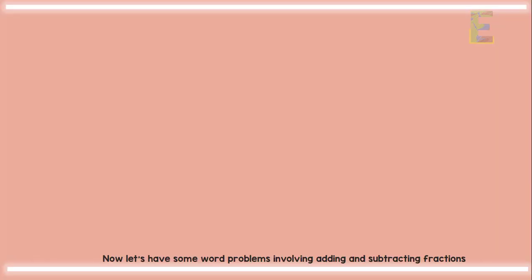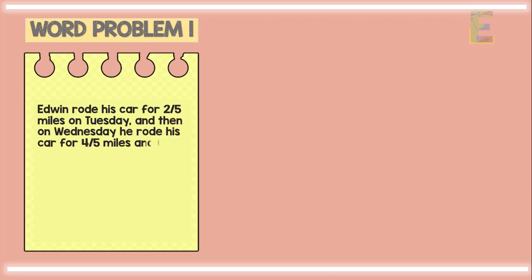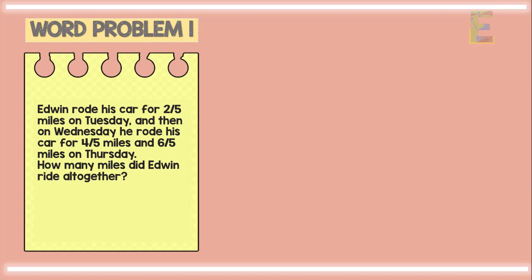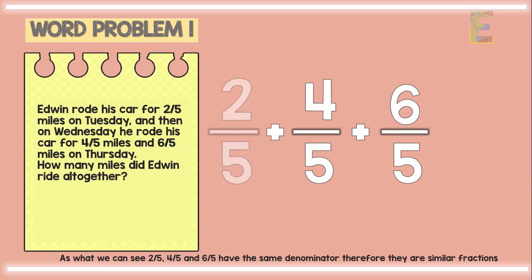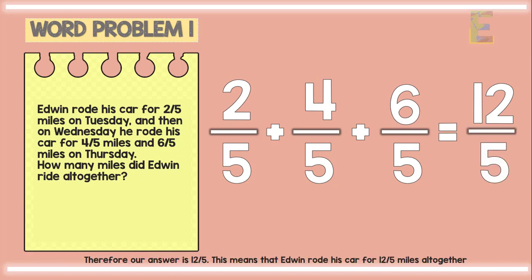Now let's have some word problems involving adding and subtracting fractions. Edwin rode his car for 2 over 5 miles on Tuesday, 4 over 5 miles on Wednesday, and 6 over 5 miles on Thursday. How many miles did Edwin ride altogether? Since 2 over 5, 4 over 5, and 6 over 5 have the same denominator, they are similar fractions. We add the numerators — 2 plus 4 plus 6 — and copy the denominator 5. Our answer is 12 over 5 miles altogether.